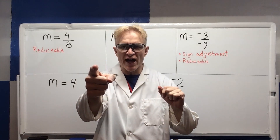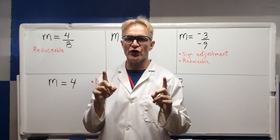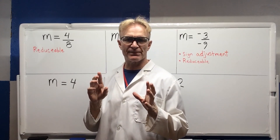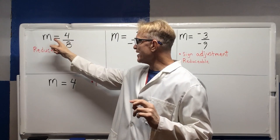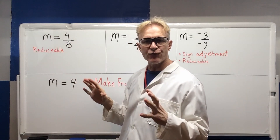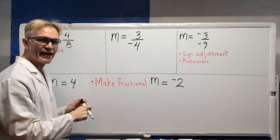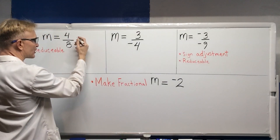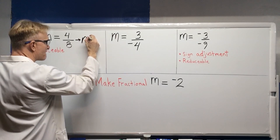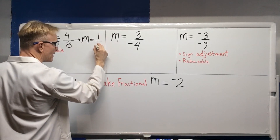Before I show you how to find the slope of a line given two points, I want to first show you how to do some slope adjustments. The first adjustment is this one: M, which stands for the slope, equals four-eighths. Now, four-eighths is reducible, so we're going to reduce that down to one-half. It's beneficial to reduce the slope as quickly as possible, so we rewrite that as M equals one-half.